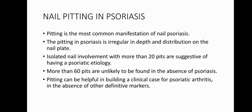Nail pitting in psoriasis: pitting is the most common manifestation of nail psoriasis. The pitting in psoriasis is irregular in depth and distribution on the nail plate. Isolated nail involvement with more than 20 pits is suggestive of a psoriatic etiology. More than 60 pits are unlikely to be found in the absence of psoriasis. Pitting can be helpful in building a clinical case for psoriatic arthritis, particularly in the absence of other definitive markers.